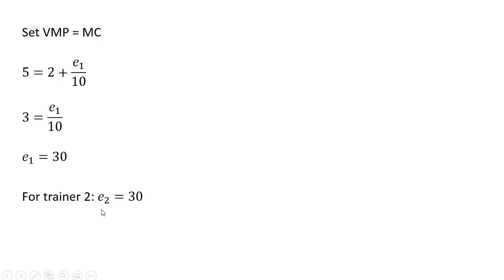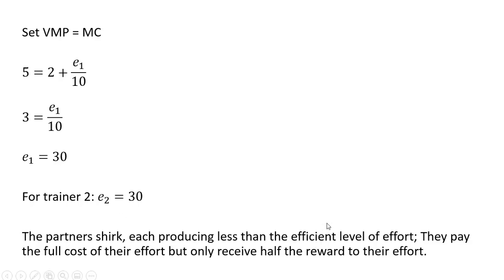Trainer 2 will have the same value of the marginal product, same marginal cost. So trainer 2 will provide only 30 units of effort. So the partners shirk, each producing less than the efficient level of effort. They pay the full cost of their effort but only receive half the reward to their effort. And we saw that given that the value of the marginal product now is only one-half for each trainer. All right, I will stop here.